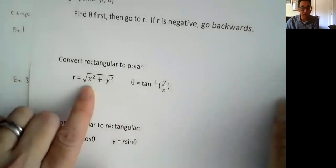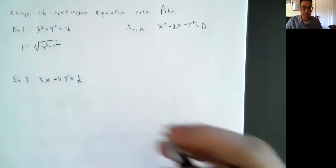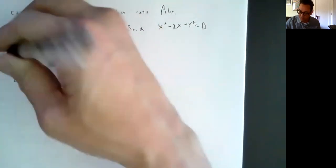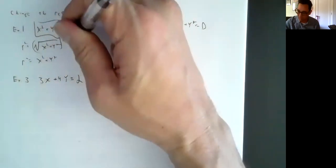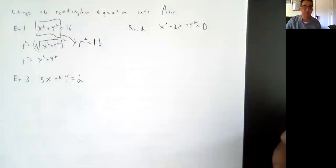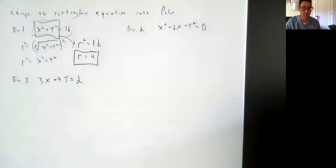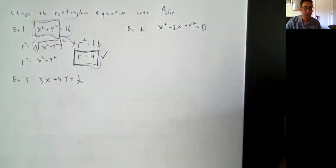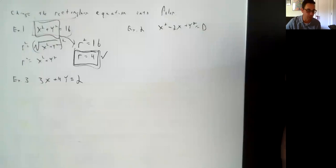Example one: x² + y² = 16, which we should know is a circle. There's an x² + y² right there. Since r² = x² + y², we can replace x² + y² with r², giving r² = 16. Taking the square root of both sides gives r = 4, and that's the final answer. Just like x = 3 is a vertical line with no y, r = 4 has no theta — you don't always need both variables.